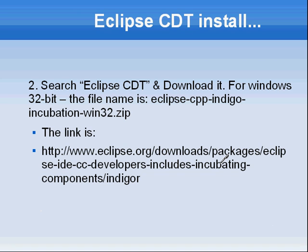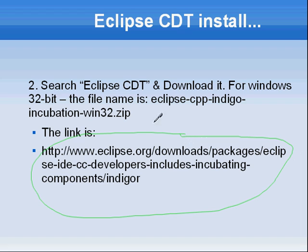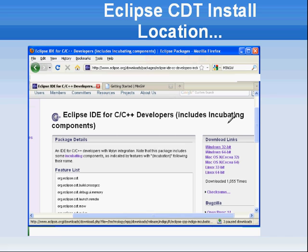Next, we will install Eclipse CDT. Search for Eclipse CDT and download the Eclipse CDT installation zip file — this is the link you would get from that search. You will see a page with download links; choose the operating system that you have. In our case we are using Win32, Windows 32-bit, and this will download a zip file — the Eclipse CDT zip file.